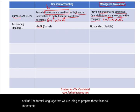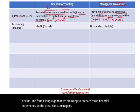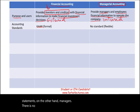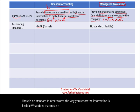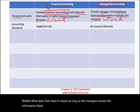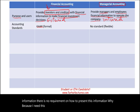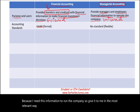On the other hand, for managerial accounting there are no standards. The way you report the information is flexible. As long as the managers accept the information, there is no requirement on how to present it. The reason is that the information needs to run the company, so it should be given in the most relevant way that helps managers do that.